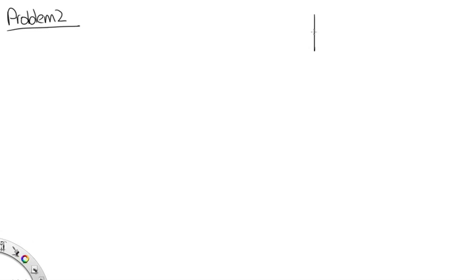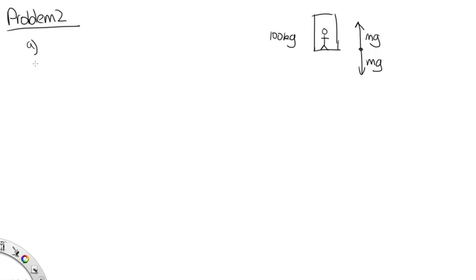Problem 2. In this problem, we have a man standing in a lift. The man has a mass of 100 kilograms. The lift is on Earth, so he experiences a downward force mg, and a reaction force upwards of magnitude mg. Part A asks what force the floor exerts on him if he's stationary. If stationary, the floor pushes up to cancel the downward mg force, so the force is 100 × 9.8 = 980 newtons upwards.